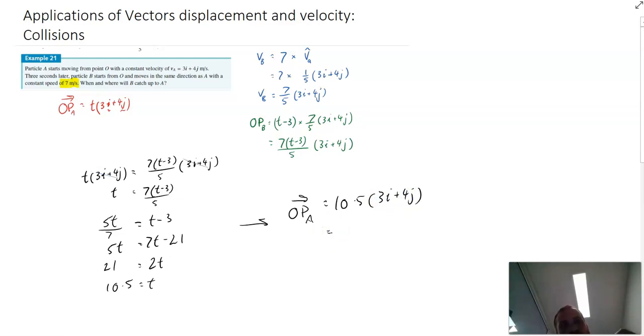So I can say OPA equals 10.5 bracket 3i plus 4j. I should have just gone with 21 over 2. So 21 over 2, we have 63 over 2i plus 84 over 2, which is 42j.